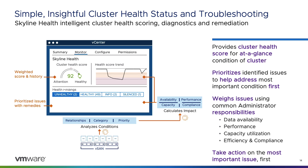The new mechanism uses a sophisticated method of weighing triggered health checks and aligns them with common pillars of responsibility, such as data availability, performance, capacity, as well as efficiency and compliance. It then provides the most important, impactful triggered health findings in order of priority, so an administrator can resolve issues quickly and easily.